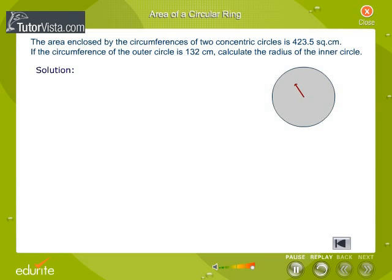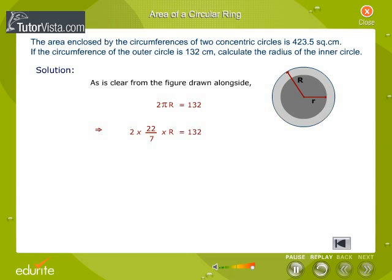Solution: Take a look at the figure drawn here. The circumference of the outer circle is given as 132 centimeters. That is, 2πR = 132. By replacing the numerical value of π, we get the external radius. Therefore, R = 21 centimeters.